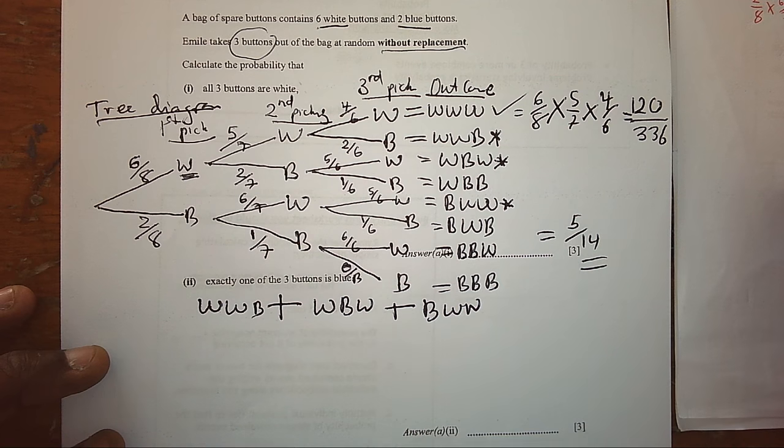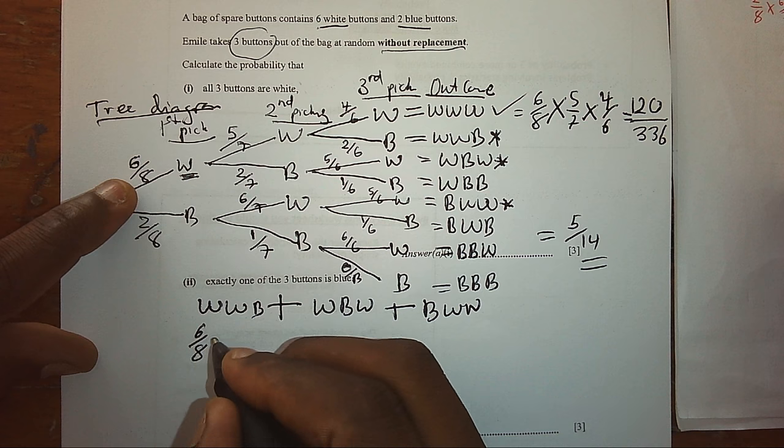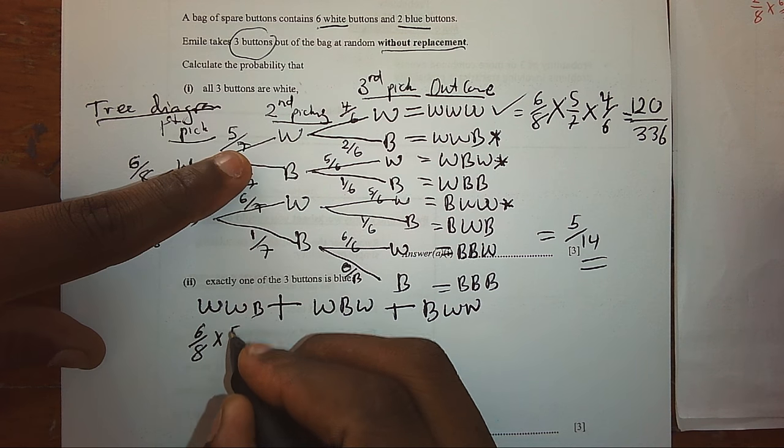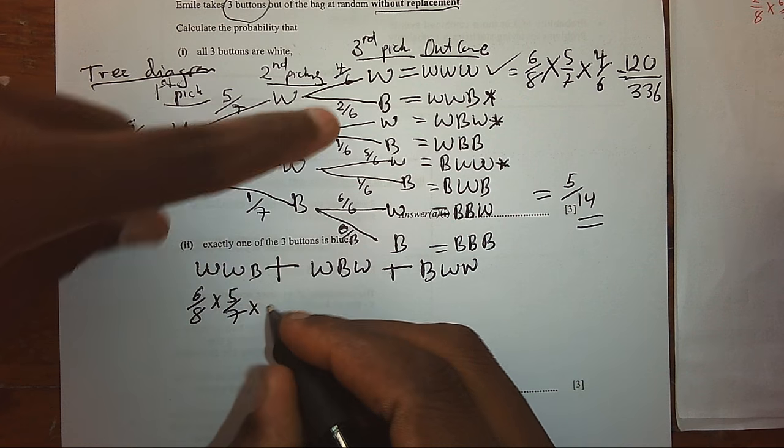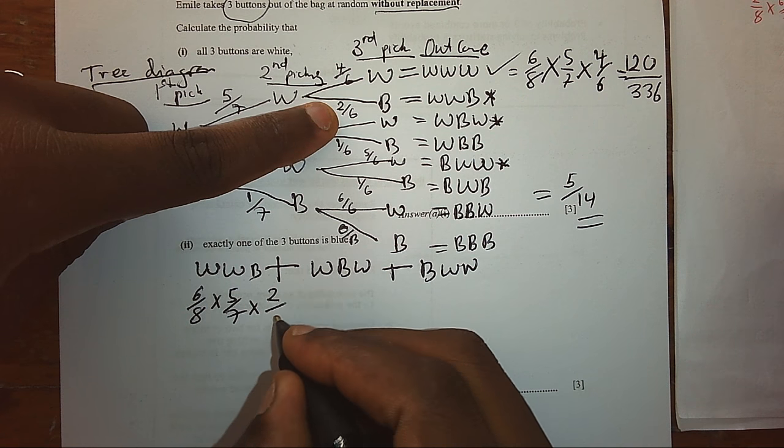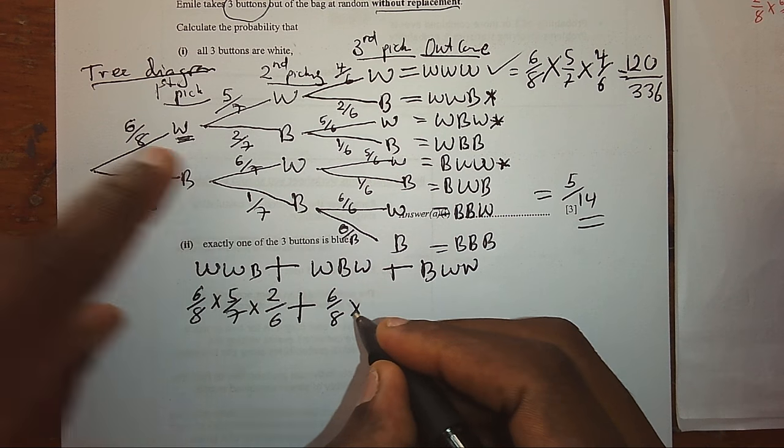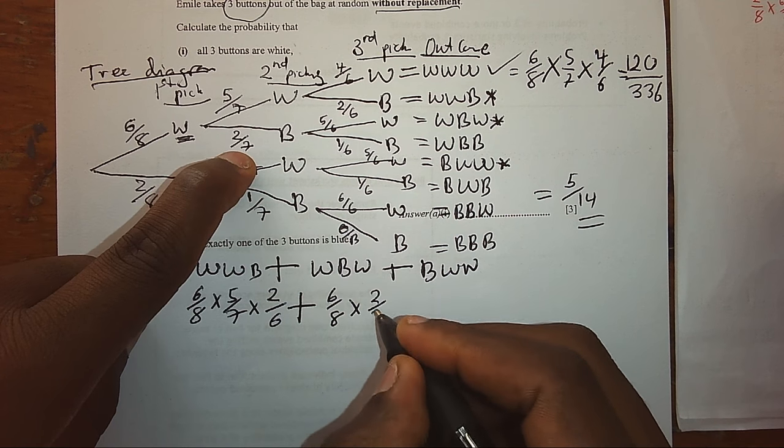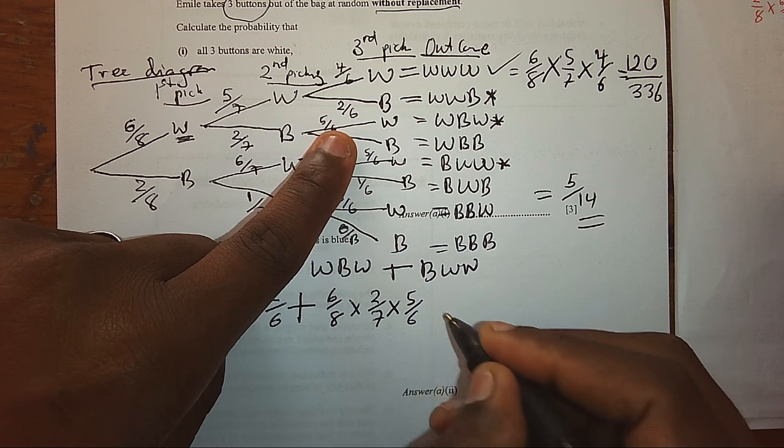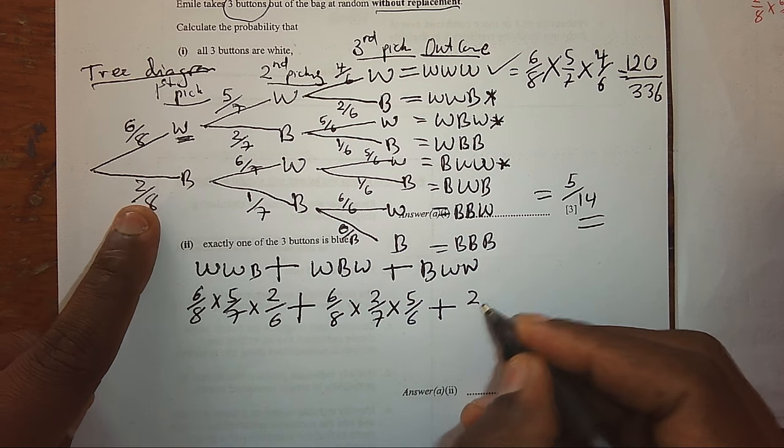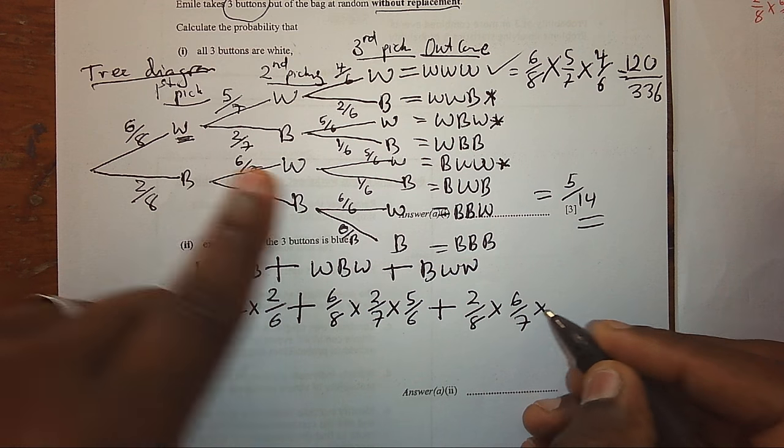Now, look at the probabilities for this. White, and white, and blue. Or, white, and blue, and white. Or, blue, and white, and again, white.